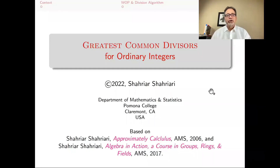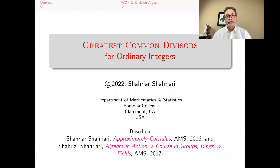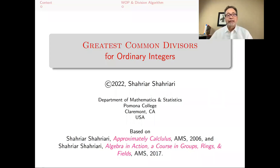Hello, my name is Shahyar Shahyari, and this lecture is part of an occasional series of lectures on general topics in undergraduate mathematics. The topic of this lecture is greatest common divisors for ordinary integers. Some version of this appears in my book Approximately Calculus, and also in my other book Algebra in Action: A Course in Groups, Rings and Fields, as well as many other books.